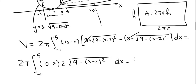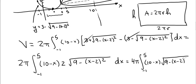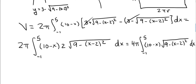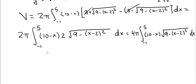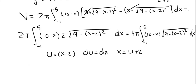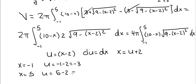Factoring out the 2, this is 4 pi times the integral from minus 1 to 5 of 10 minus x times the square root of 9 minus x minus 2 squared dx. All we have to do is evaluate this integral. We're going to use substitution. Let u equal x minus 2. Then du equals dx, and x equals u plus 2. When x equals minus 1, u equals minus 3. When x equals 5, u equals 3.